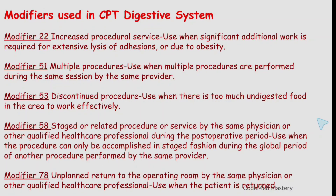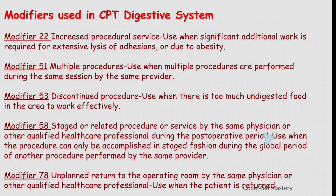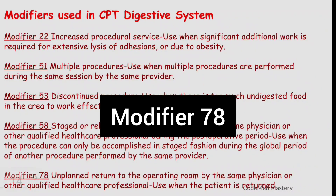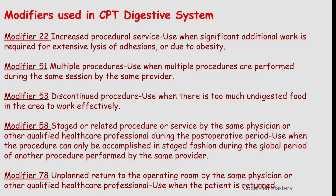Modifiers used in the digestive system include: modifier 22 for increased procedural service; modifier 51 for multiple procedures; modifier 53 for discontinued procedure; modifier 58 for staged or related procedure or service by the same physician during the postoperative period; and modifier 78 for unplanned return to the operating room by the same physician.